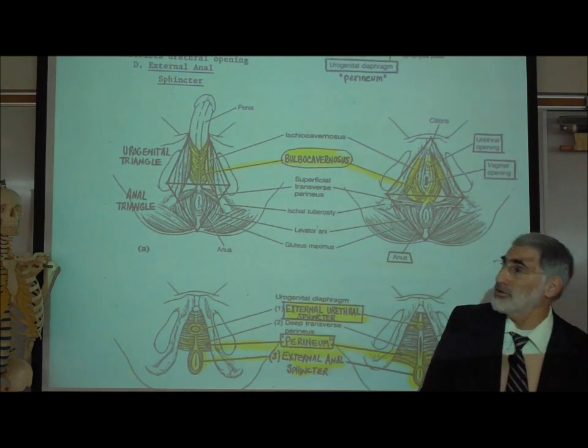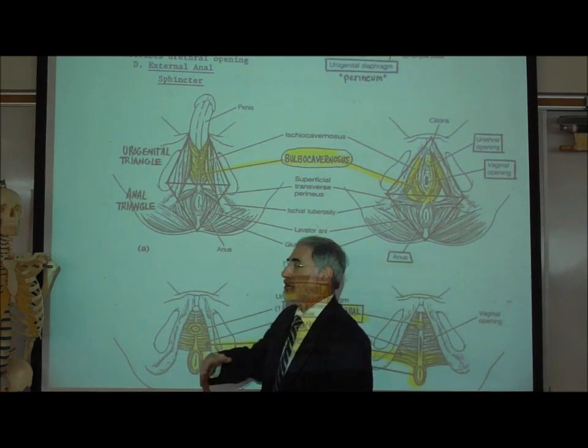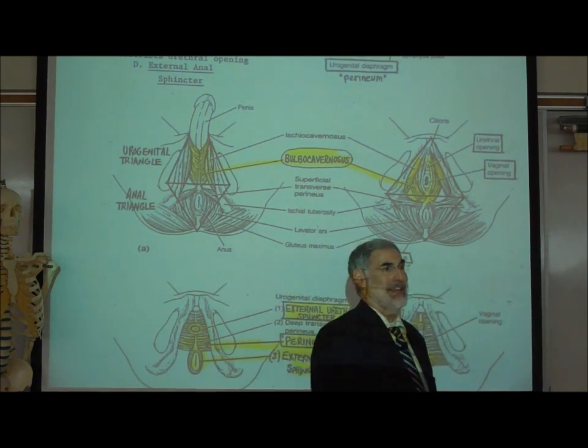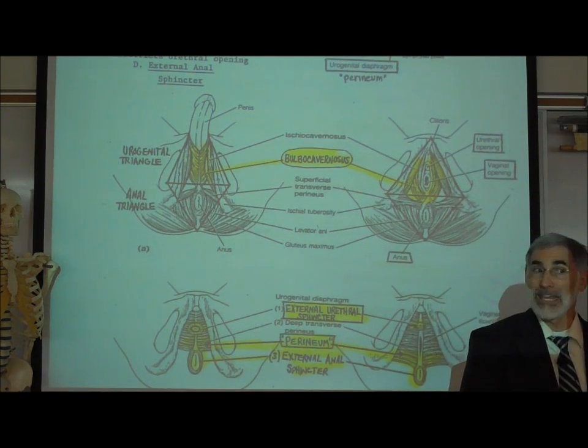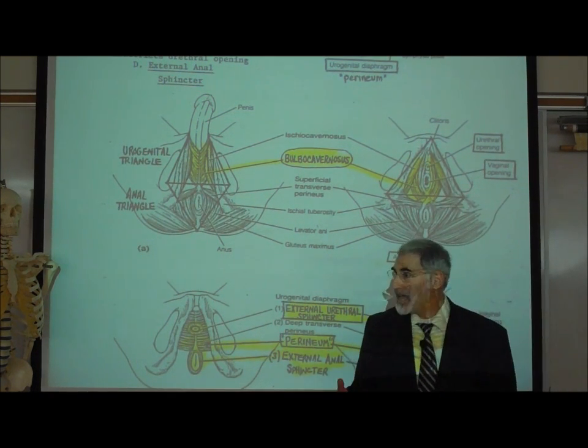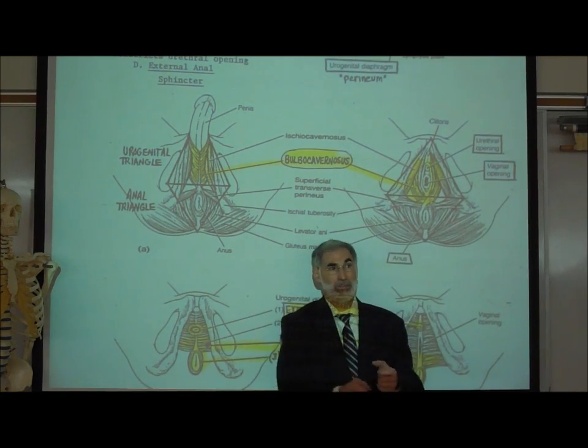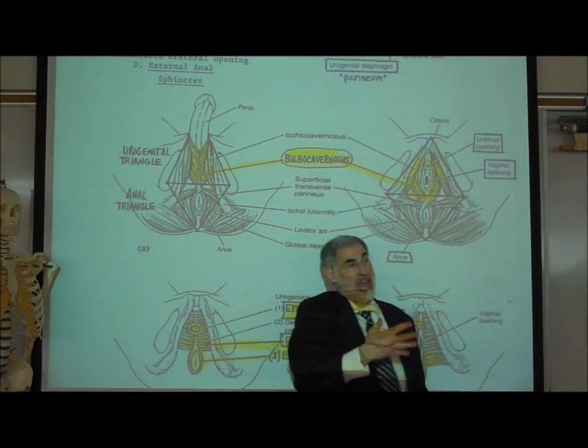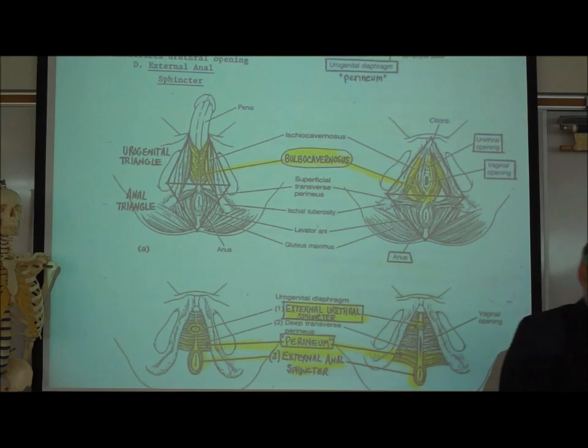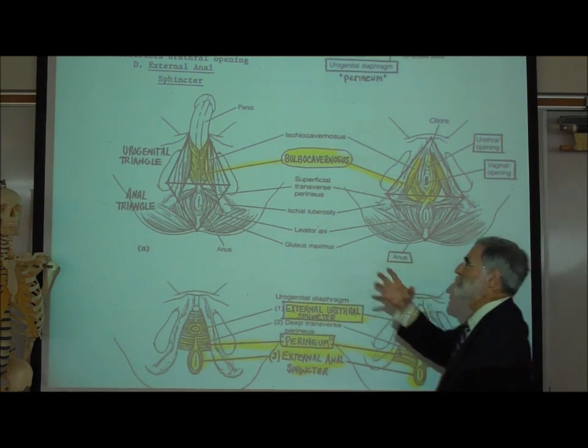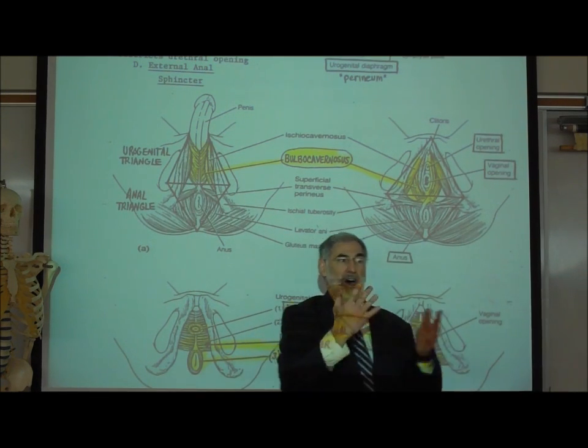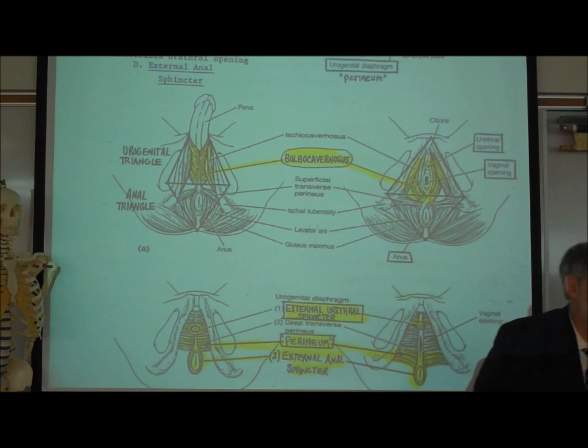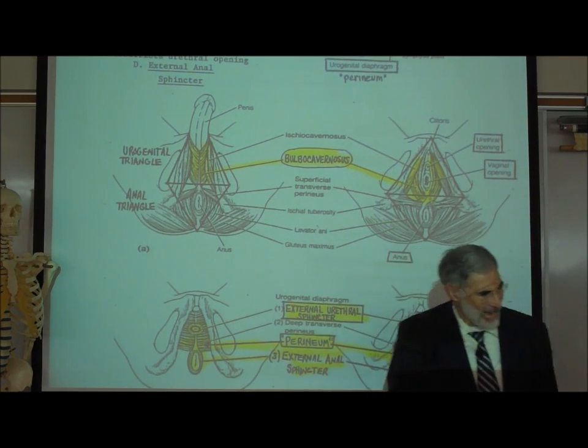That muscle also will contract rhythmically, involuntarily during an ejaculation. So when a guy ejaculates during a male orgasm, it contracts and relaxes and contracts and relaxes rhythmically. And in that case, it's contributing to spurting of the semen out the penis. So that's the bulbocavernosus muscle in the guy.